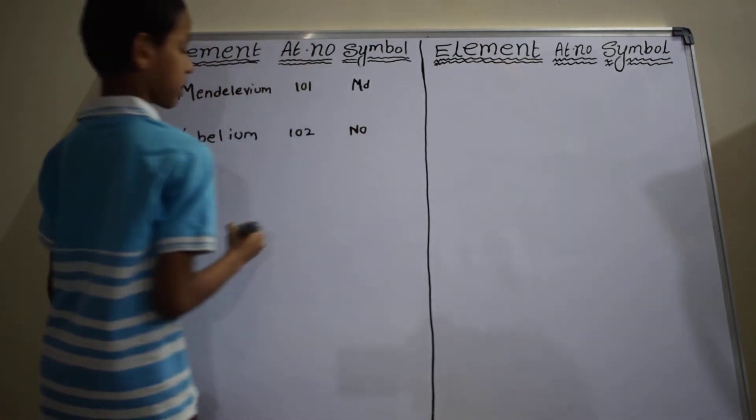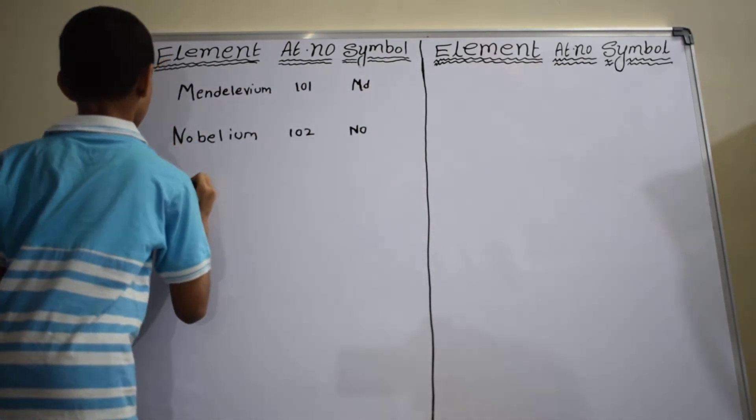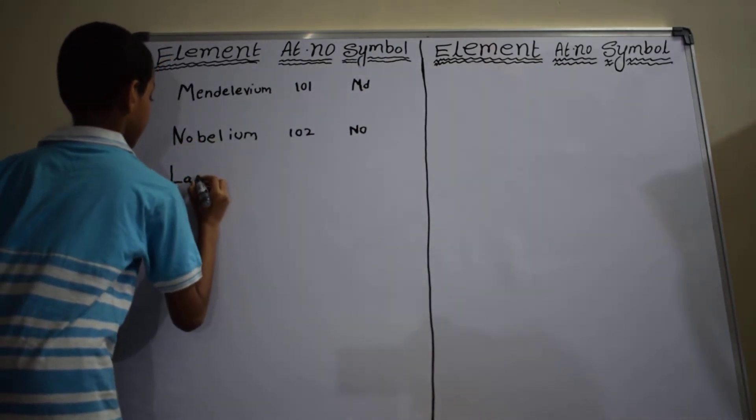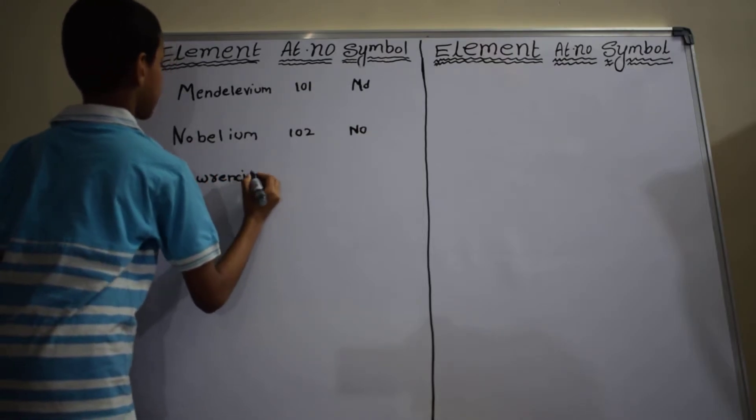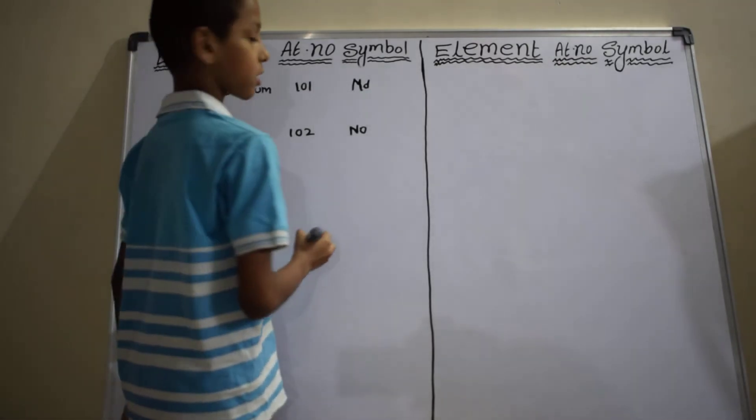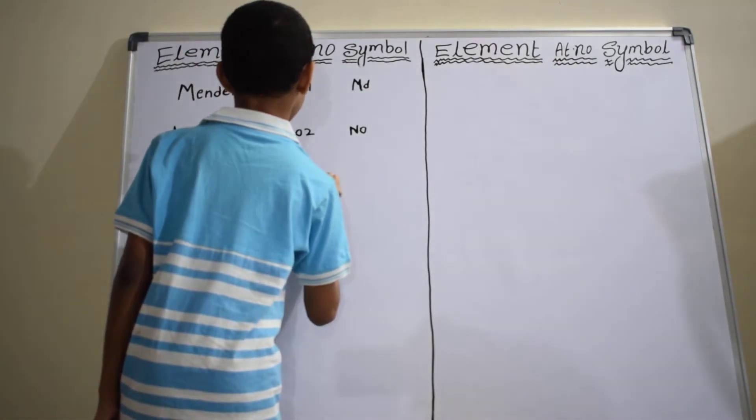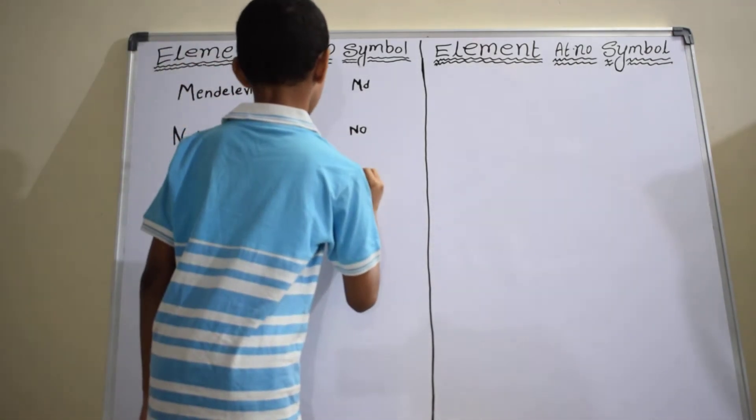Next element is Lawrencium. Atomic number is 103. Symbol is Lr.